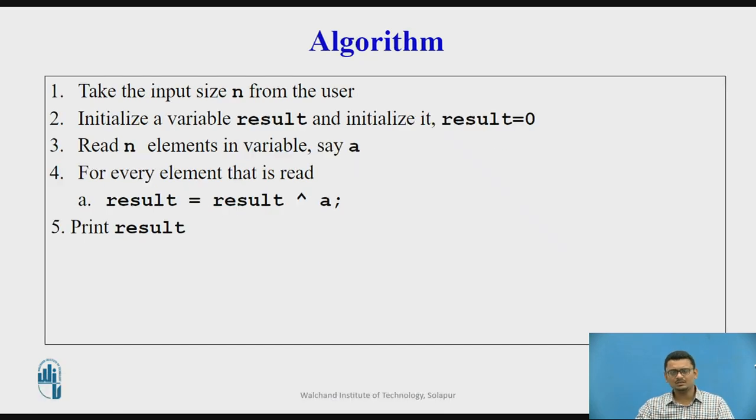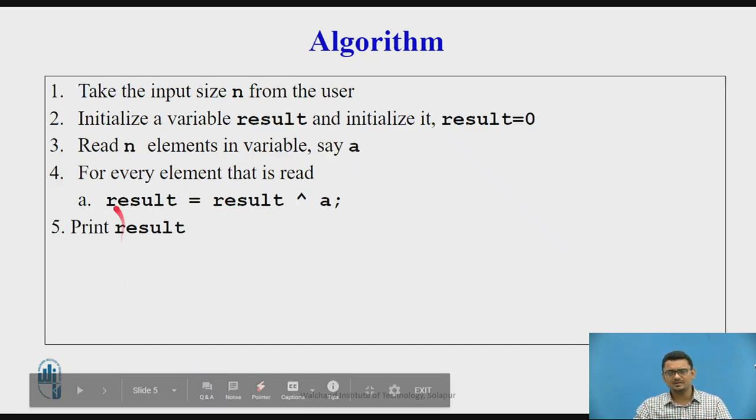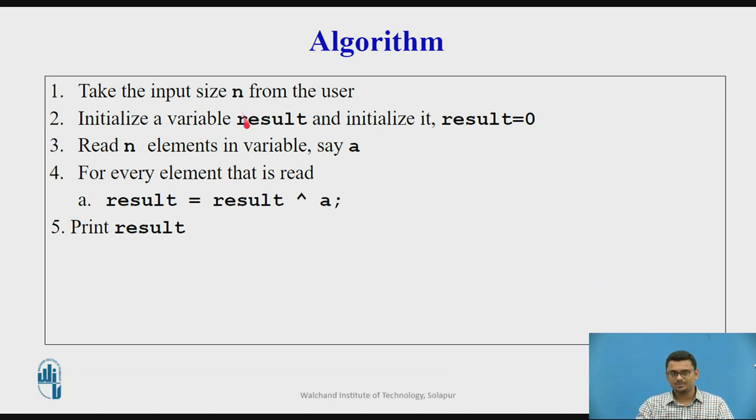What is the algorithm to solve this particular problem? First we take the input size as n from the user. Then I am going to require a variable result and this will be initialized to 0. The reason that we initialize to 0 will be explained later as we see how to solve the problem.